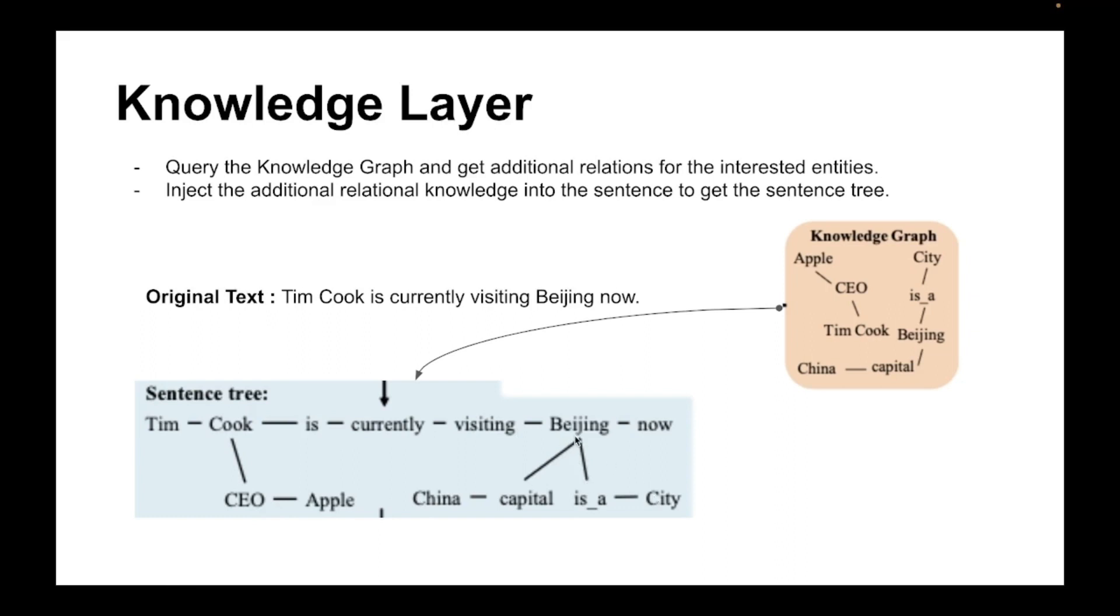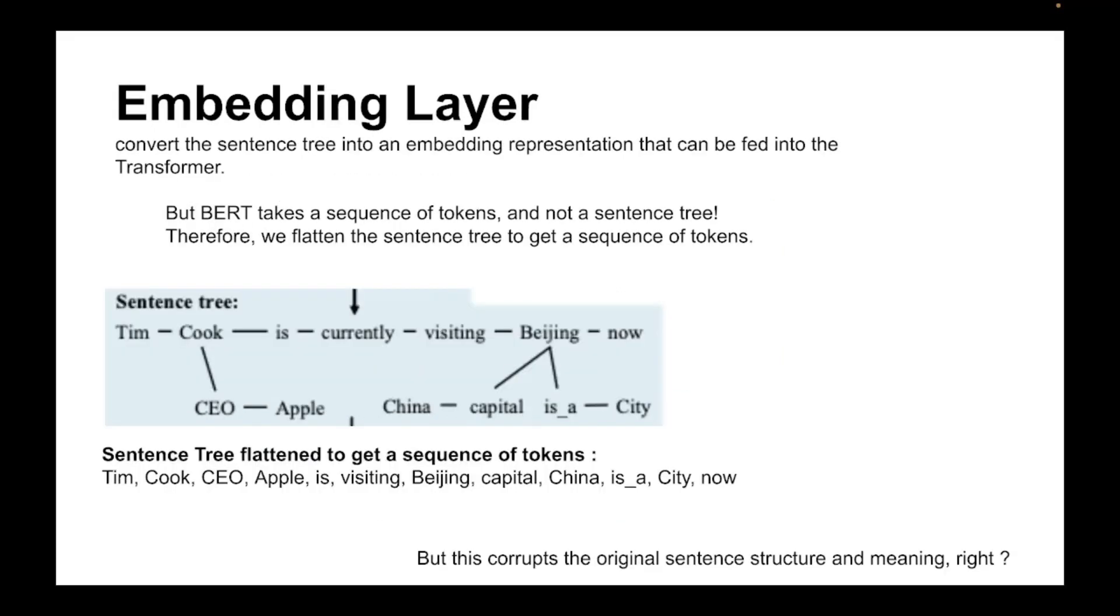Now once we have the sentence tree, the embedding layer describes how we can convert this sentence tree into embedding vectors that can be fed into the transformer model. But one thing to note is BERT model takes a sequence of tokens and not a sentence tree. So therefore we need to flatten the sentence tree to get a sequence of tokens.